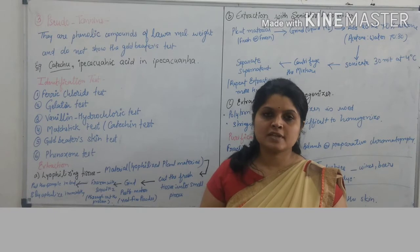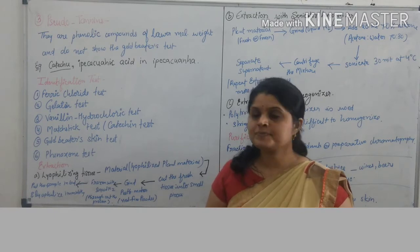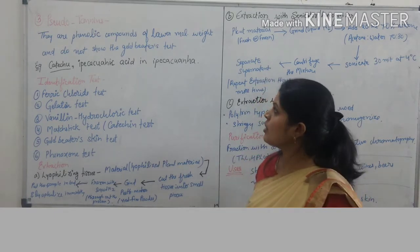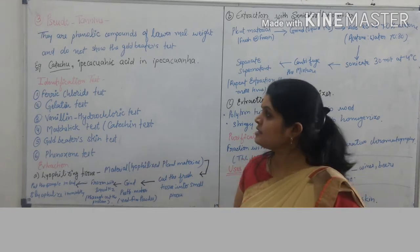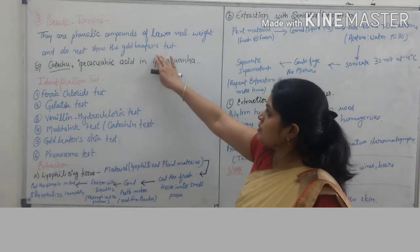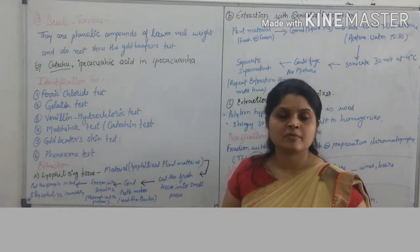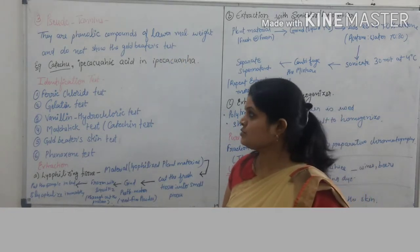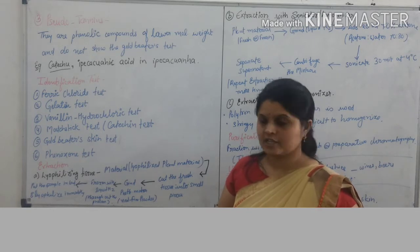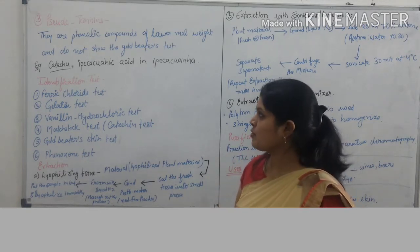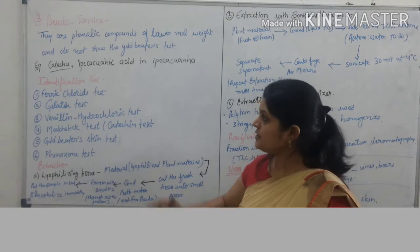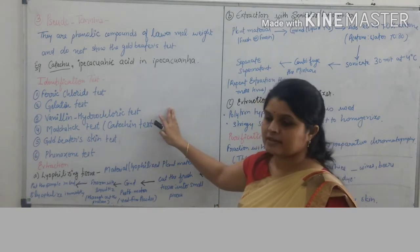The third classification is pseudo-tannins. They are non-hydrolysable tannins of lower molecular weight and do not give a positive gold beaker test. Examples of pseudo-tannins include catechu, epicatechin, and theogallin.